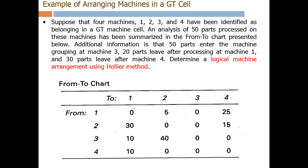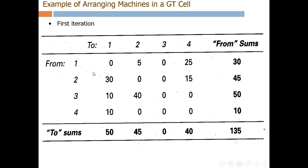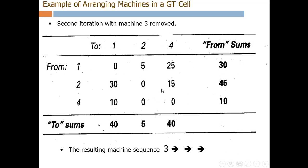In step 1 we prepare the from-to chart. We then calculate the from sum and to sum — the from sum is the row summation and the to sum is the column summation. In step 3 we look for the minimum value across all from and to sums. The minimum value found is zero, so we eliminate machine 3. The new reformatted chart is formed without the row and column for machine 3.